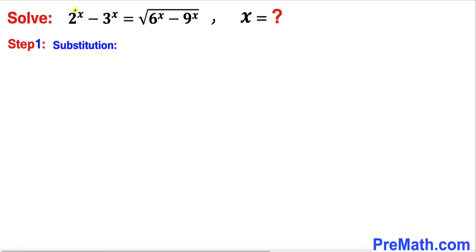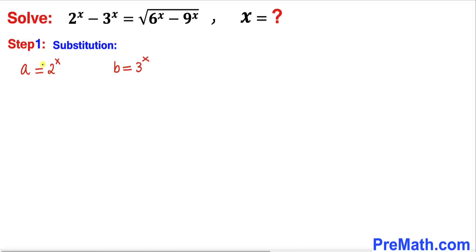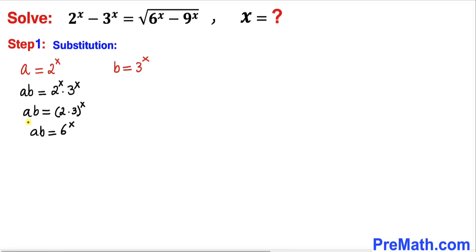Let's substitute 2^x as a and 3^x as b to make our life a lot simpler. So a equals 2^x and b equals 3^x. If we multiply these two equations, a times b equals 2^x times 3^x, which is (2 times 3)^x, which is 6^x. So a times b turns out to be 6^x.